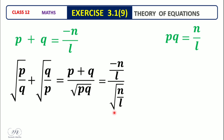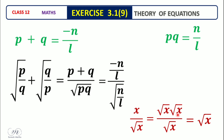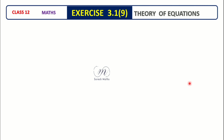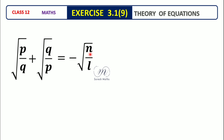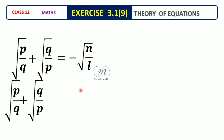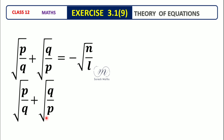This gives minus n by L divided by root of n by L. We simplify: x divided by root x equals root x, so this becomes minus root of n by L. This negative term moves to the left side and becomes positive, so root of P by Q plus root of Q by P plus root of n by L is equal to 0.